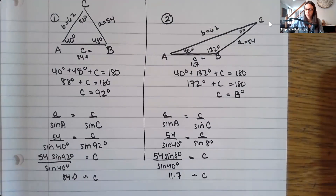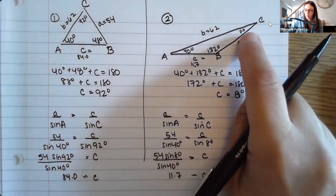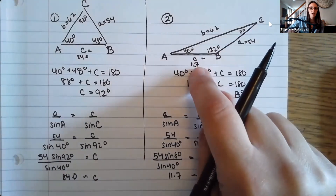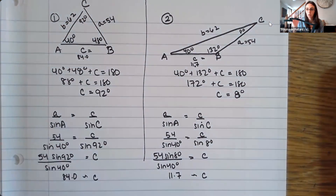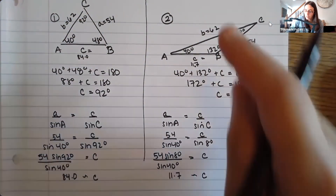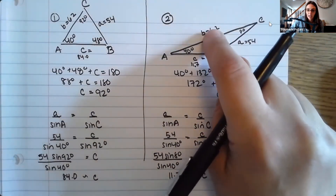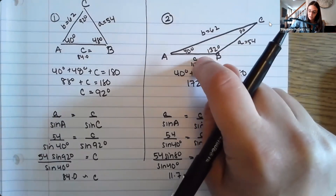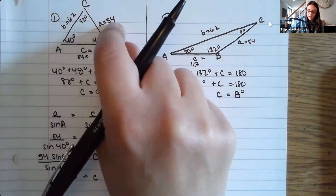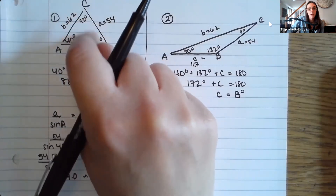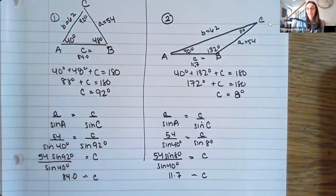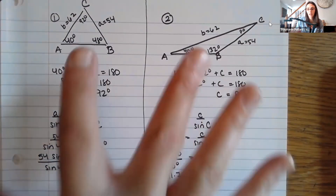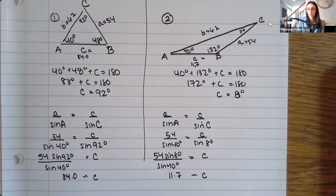This confirms a key relationship: the largest length is across from the largest angle, and the smallest angle is across from the smallest length. You can see this in both triangles — it's a good check to make sure your setup is correct. So here we have two complete triangles that can be formed from the original given information, which is the two-solution case for side-side angle.